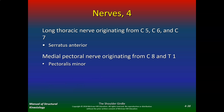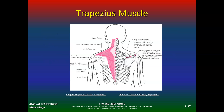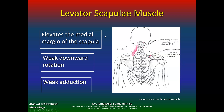The long thoracic nerve originates from C5, C6, and C7 and innervates the serratus anterior. The medial pectoral nerve originates from C8 and T1 and innervates pec minor. The levator scapulae elevates the medial margin of the scapula; it's a weak downward rotator and a weak adductor.